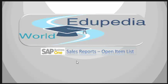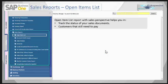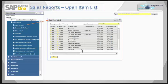In this session we will continue with the sales report. We'll start with the Open Item List report, which is the first report within the sales report. It helps you to track the status of your sales documents like sales orders, invoices, and other things. It also helps you to know which customers have not paid for the goods that they have purchased.